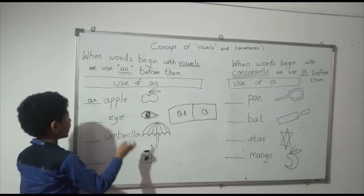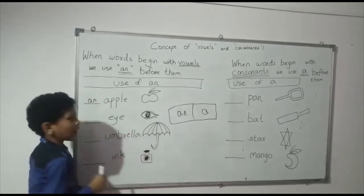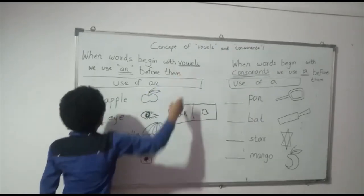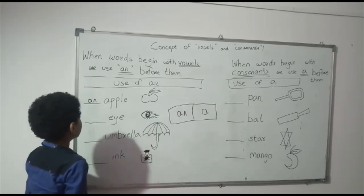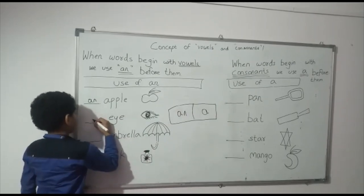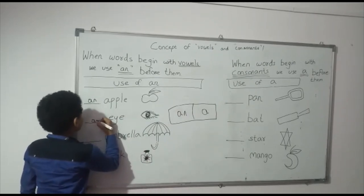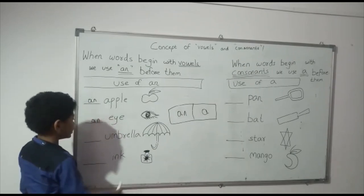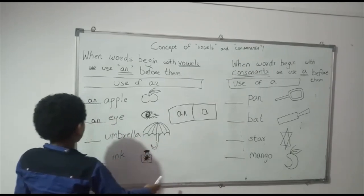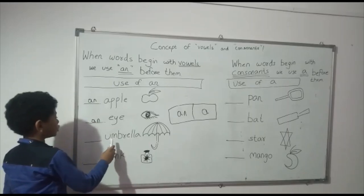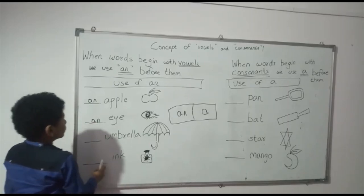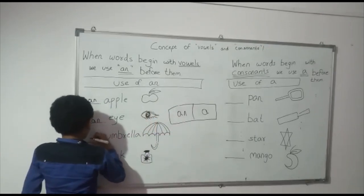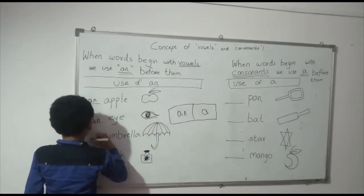Now this is an I. And I starts from E, and E is a vowel. So we use AN. This is an umbrella, and umbrella starts from U. U is a vowel, so we say AN umbrella.